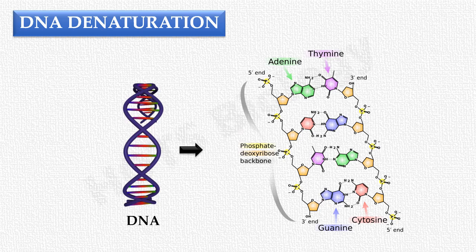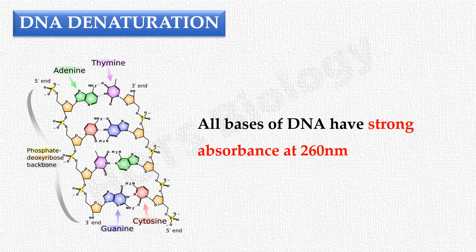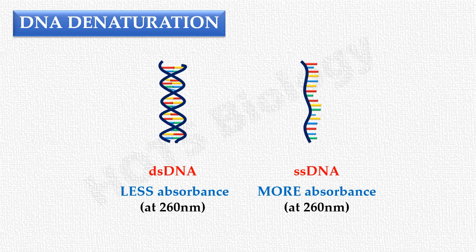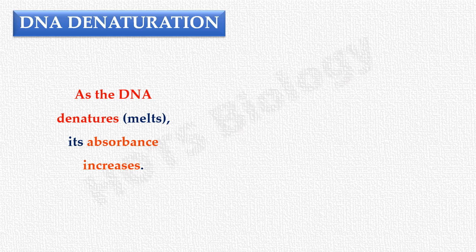All bases of DNA — that is, adenine, guanine, cytosine, and thymine — have a strong absorbance at 260 nanometers. Double-stranded DNA absorbs less light at 260 nanometers compared to single-stranded DNA. This is because base stacking interactions in the DNA double helix interfere with the absorbance. So, as DNA denatures or melts, its absorbance increases.